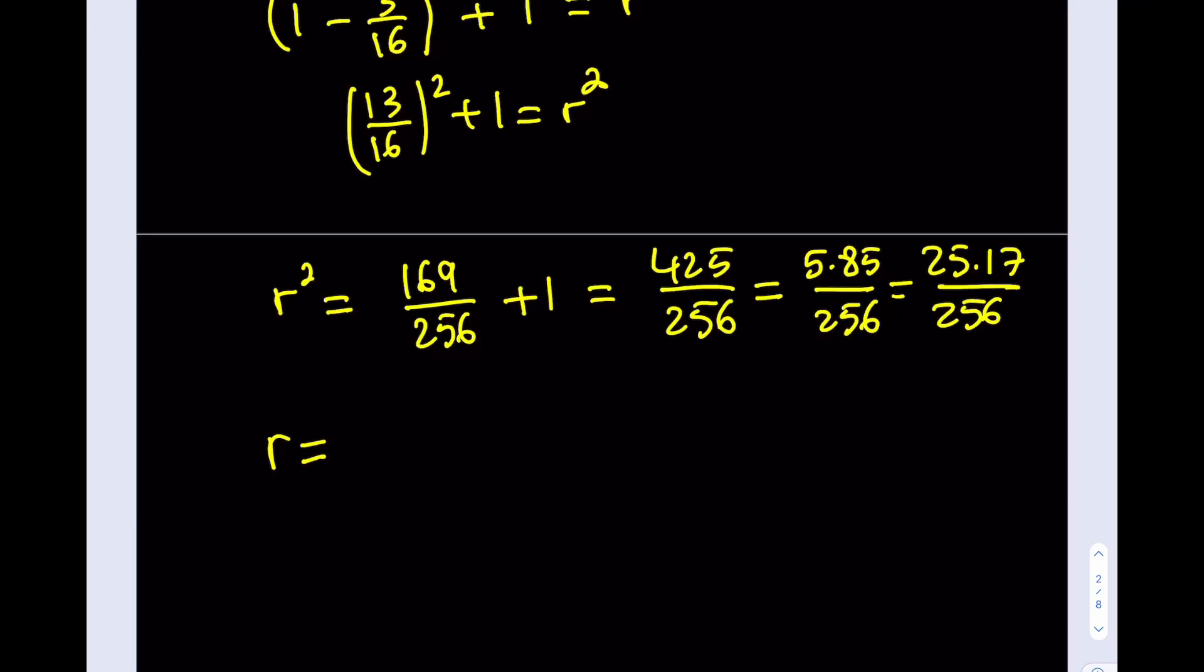Okay, if you square root 25 over 256, that should give you 5 over 16. And if you multiply that by square root of 17, you should be getting the following result.